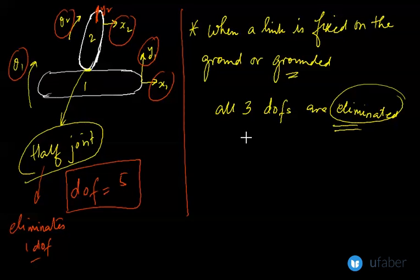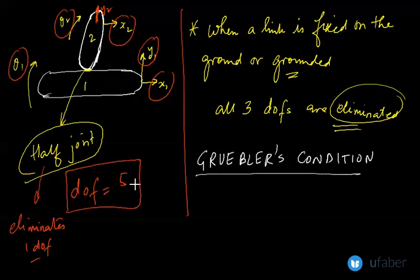Now these observations lead us to a very important criteria to find out the degree of freedom for the mechanism. That criteria is known as Grubler's criteria or Grubler's condition. Grubler's condition helps us to find out the degree of freedom of a plane mechanism.